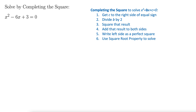Step one: we want to get the c term — that's this right here — to the other side. So, x squared minus 6x, subtracting that 3 from both sides, equals negative 3.